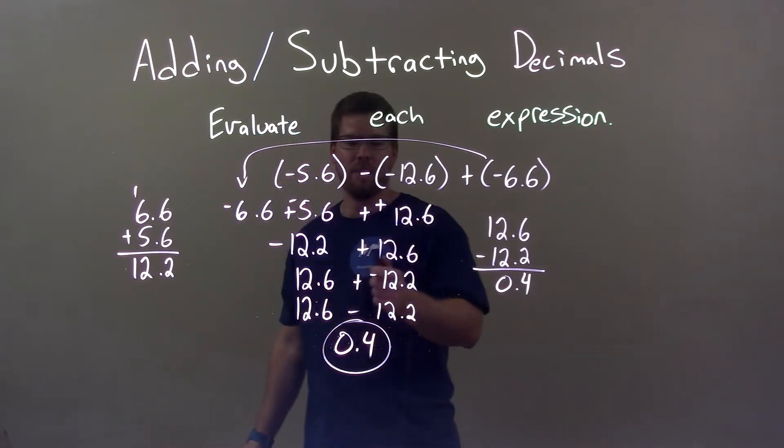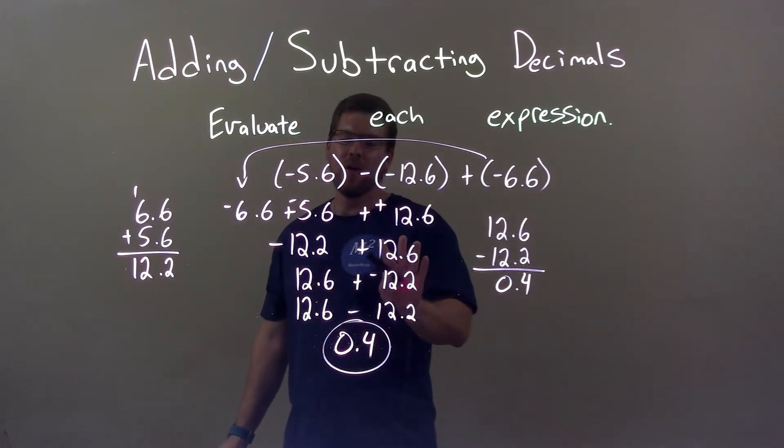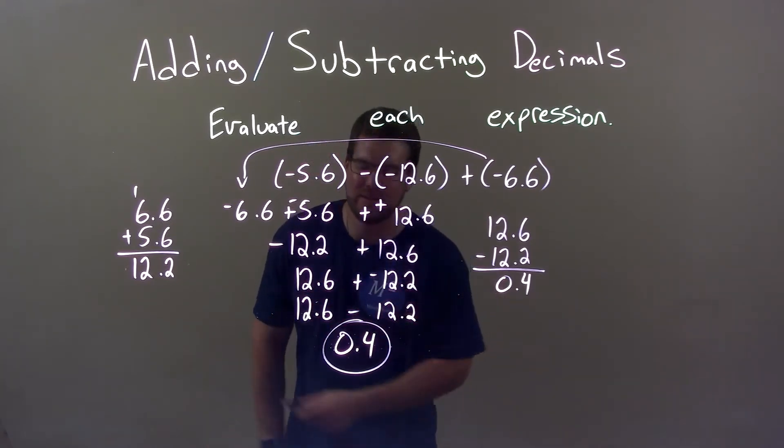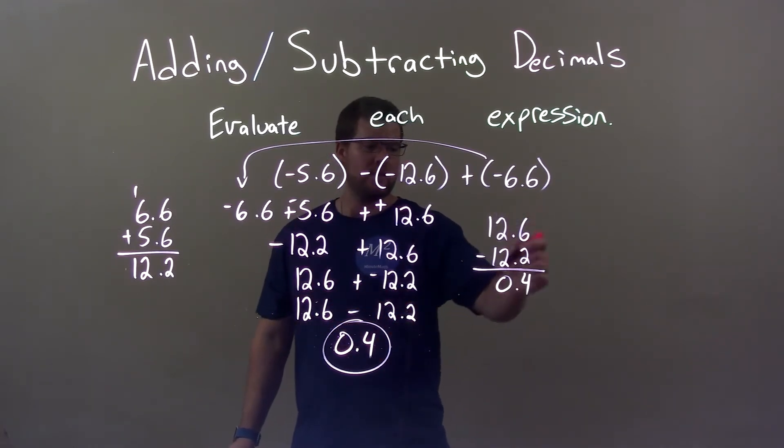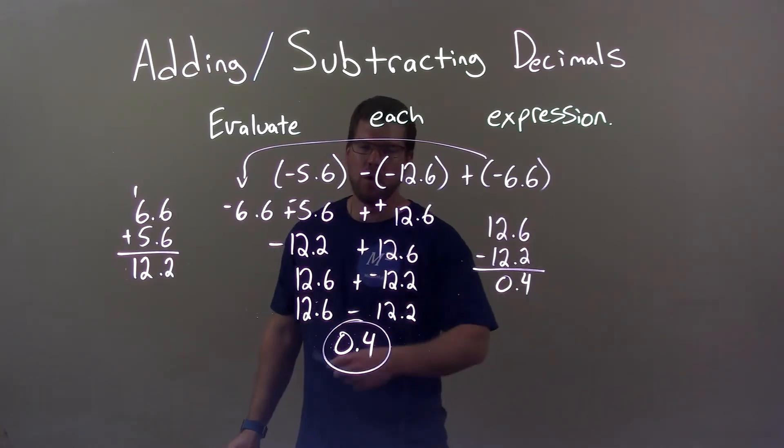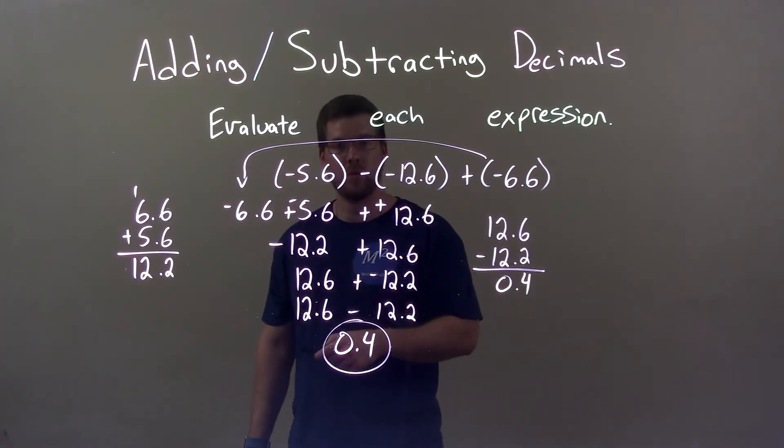Then, from there, I combine that with 12.6. I first rearranged for 12.6 first, made it plus a negative 12.2, but knowing that it's the same thing as 12.6 minus 12.2. Subtracting these two together, I got 0.4. So again, my final answer here is just 0.4.